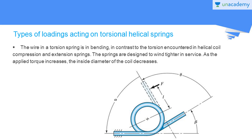Now we are going to see the types of loadings acting on torsion helical springs. In this figure, you can see a commonly used helical coil torsion spring. One end is fixed and this is the free end. When we apply torsion loadings to this spring, by observation you can find the mean coil diameter may decrease. This spring should be designed to resist this reduction in diameter. That's why while manufacturing, these springs are induced with bending loadings. In contrast to the torsion encountered in helical coil compression and extension springs, the wire in a torsion spring is in bending.